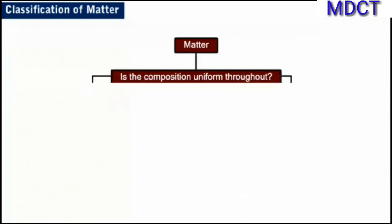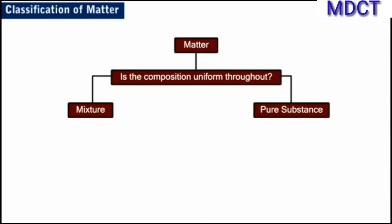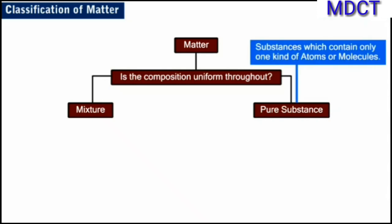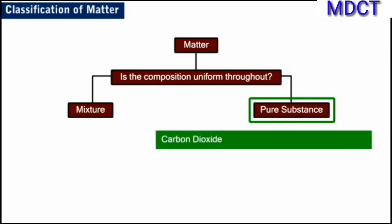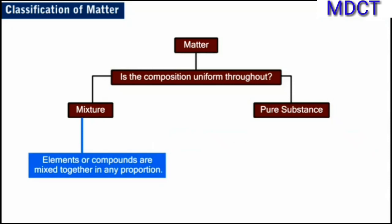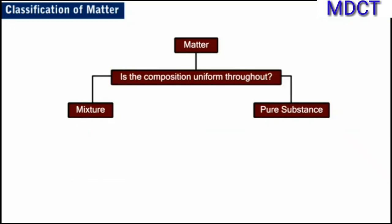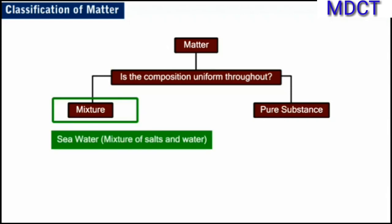Matter can be classified as pure substances and mixtures based on the chemical composition. Substances which contain only one kind of atoms or molecules are called pure substances, and in a pure substance the composition is fixed. For example, carbon dioxide is a pure substance which consists of only molecules of carbon dioxide and has carbon and oxygen in a fixed ratio. When elements or compounds are mixed together in any proportion, it results in the formation of a mixture. Thus, in a mixture the composition varies. For example, seawater comprises dissolved salts and water in varied amounts.